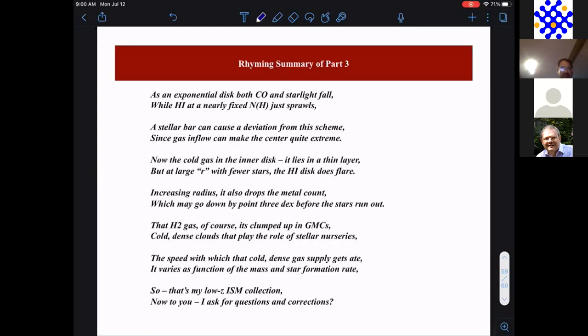Now, the cold gas in the inner disk, it lies in a thin layer, but at large R, with fewer stars, the H1 disk does flare. Increasing radius, it also drops the metal count, which may go down by 0.3 dex before the stars run out.